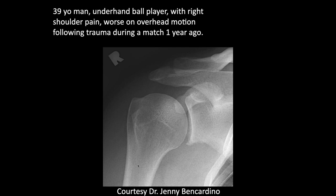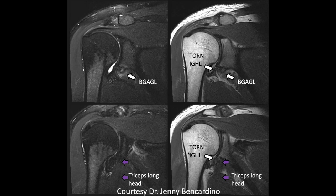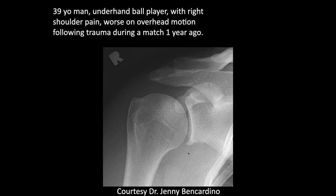A 39-year-old man, an underhand ball player, presents with right shoulder pain following trauma during a match one year ago. On the radiograph we can see some irregularity of the inferior glenoid. That could indicate injury to the inferior glenohumeral ligament or capsule, or it could reflect a prior dislocation.